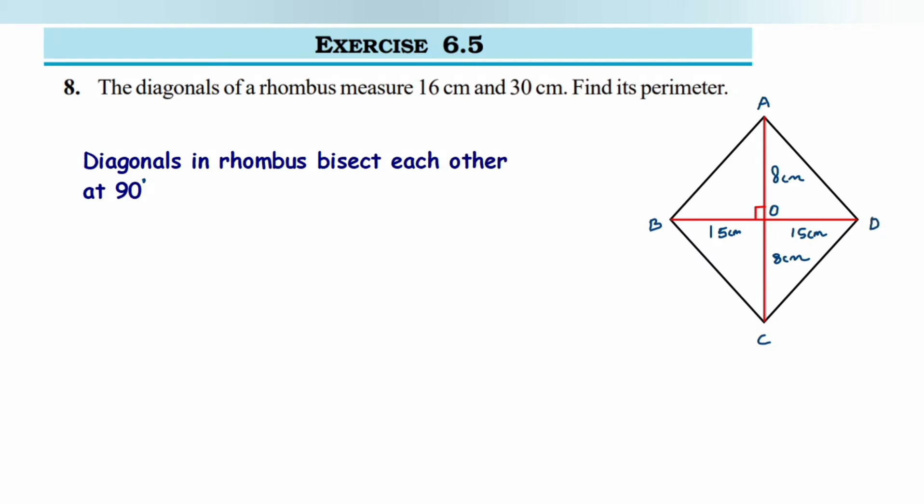Triangle AOB is forming a right angle triangle. In triangle AOB, opposite to 90 degrees is AB, so AB will become hypotenuse. So AB square will be equal to AO square plus OB square.